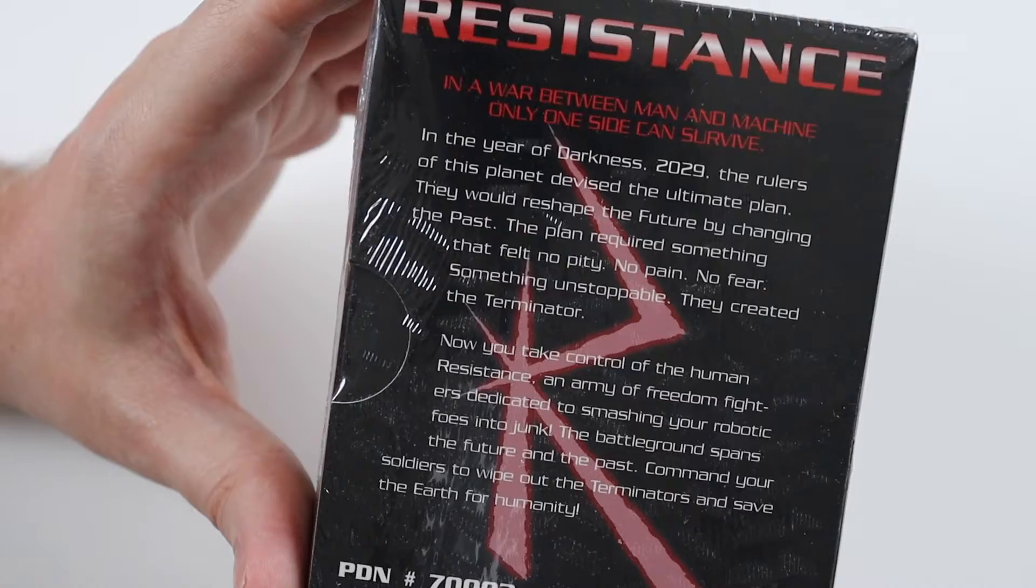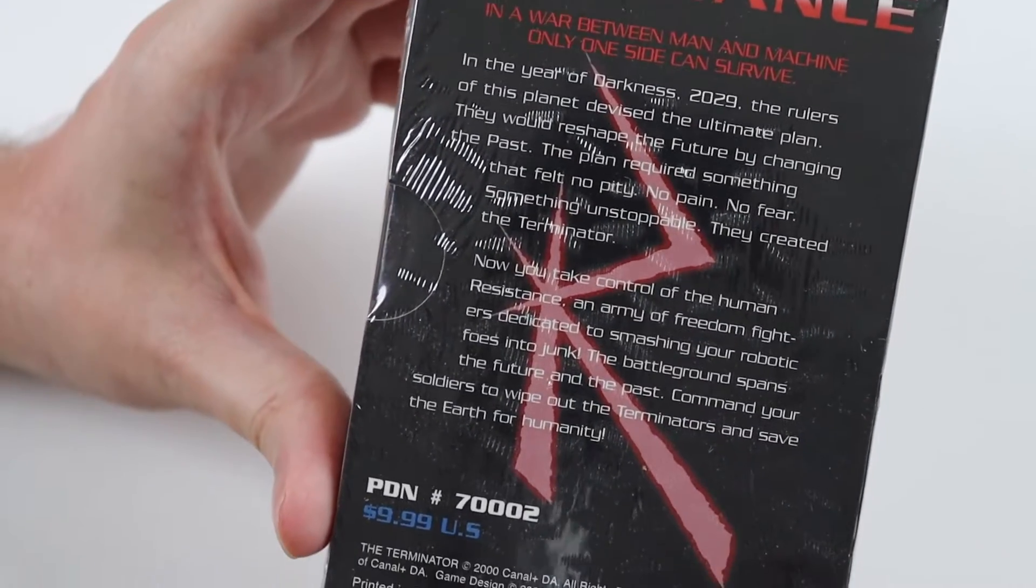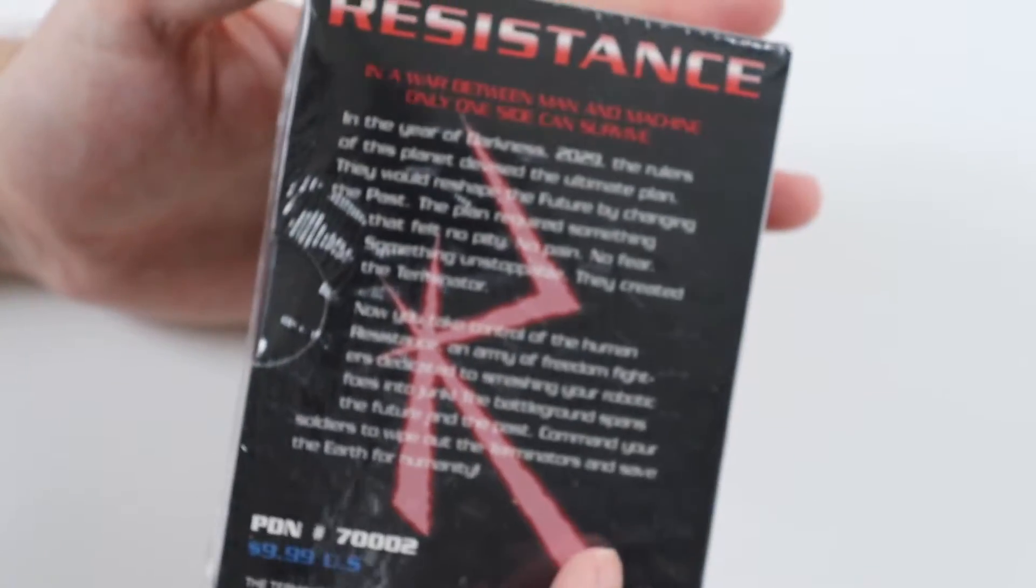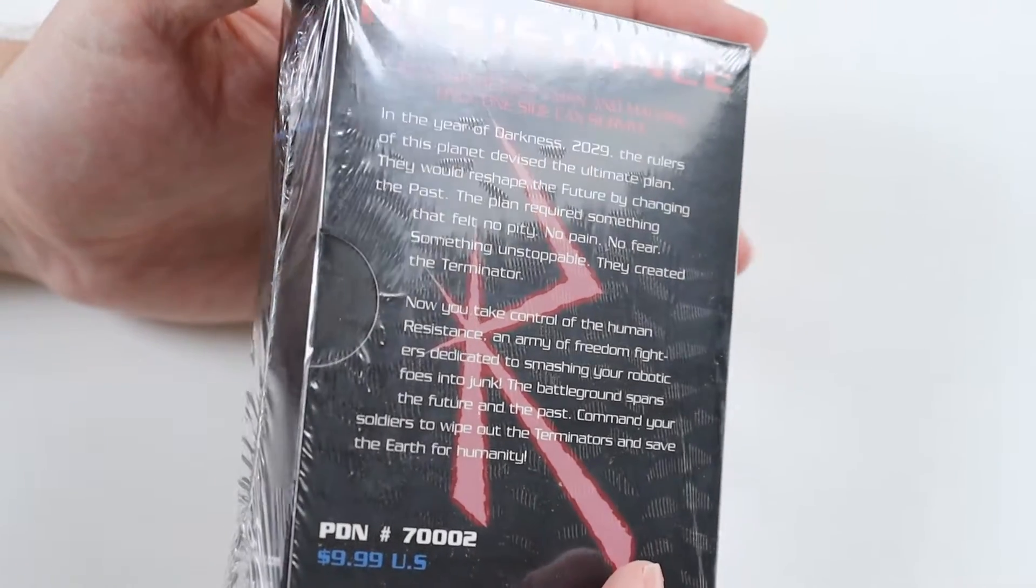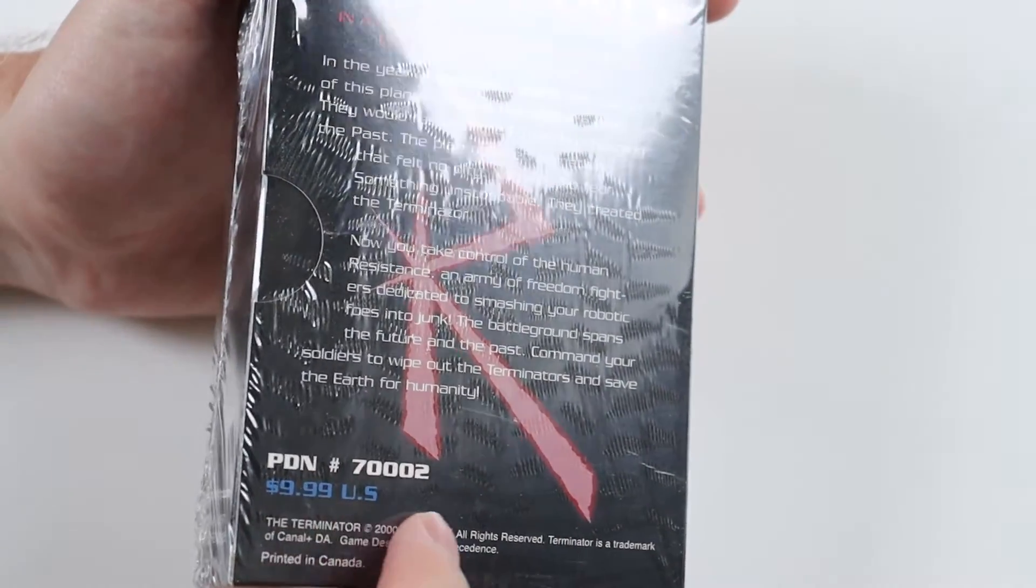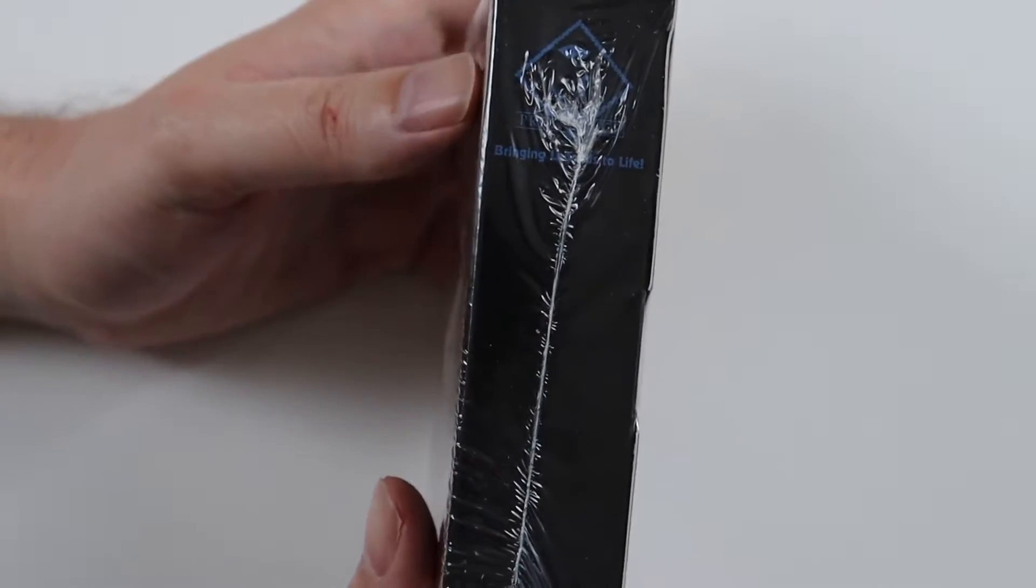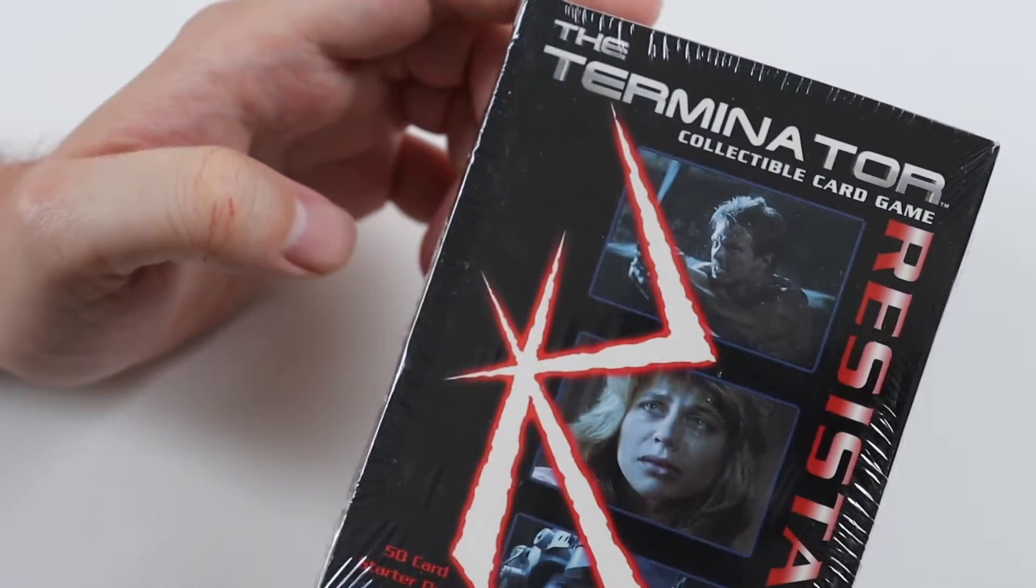So this is the blurb on the back for the resistance deck. It costs £9.99. If the box looks familiar in size and layout and font it's because it's made by Precedent who did the Babylon 5 CCG.